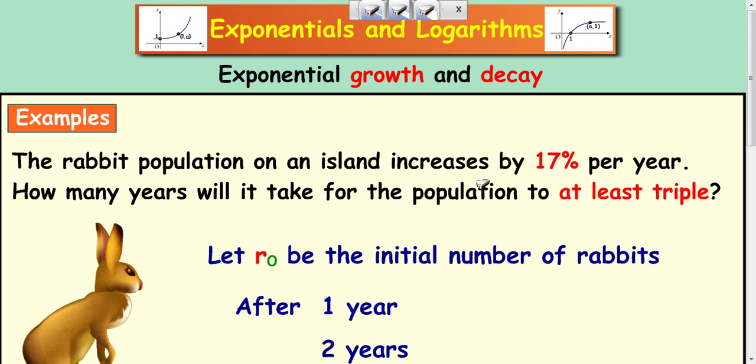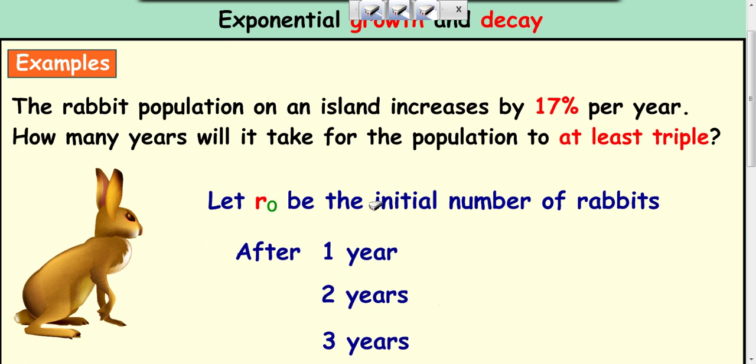What we do is we're trying to get a formula for what happens to the number of rabbits and then use a bit of trial and error to work out how many years this is going to take. So let's make a starting point and use R0 to be the initial number of rabbits. You need an initial point or starting point for these calculations.